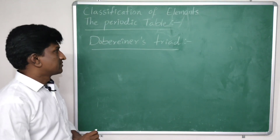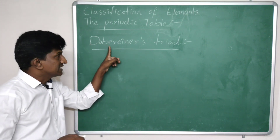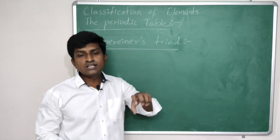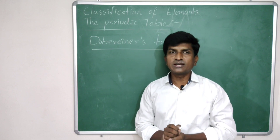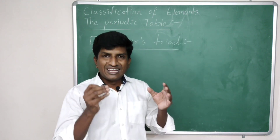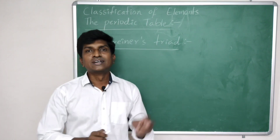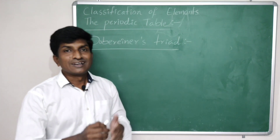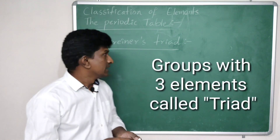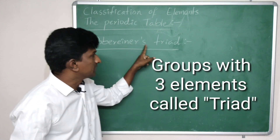The first classification of elements was given by scientist Johan Wolfgang Dobereiner, a scientist from Germany. Dobereiner observed that elements with similar properties could be grouped together. Each group has three elements, and so this classification is called Dobereiner's triads.